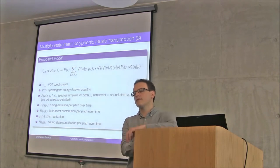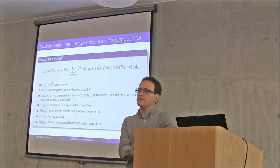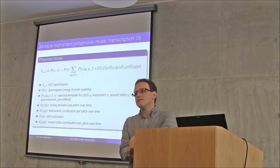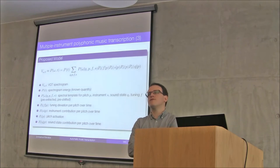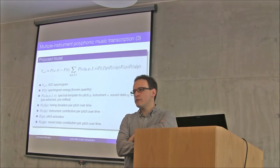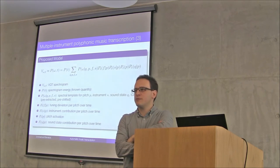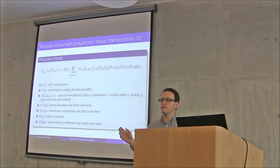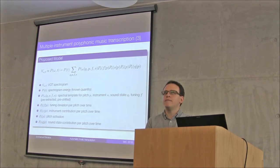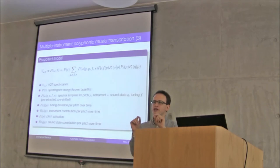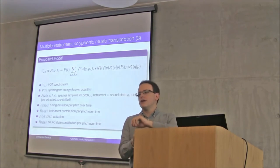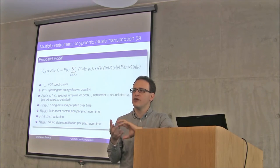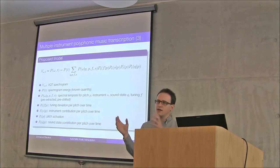Q: Would this model be better at instrument detection than a discriminative model designed specifically for that task? A: Discriminative models are not very successful for detecting instruments in polyphonic music because they use a bag-of-features approach. I think in order to do proper instrument assignment — assigning each detected note to a specific instrument — you need to go beyond discriminative methods and use some kind of joint source separation method that separates and then identifies instruments.